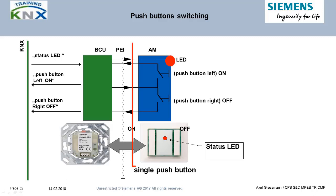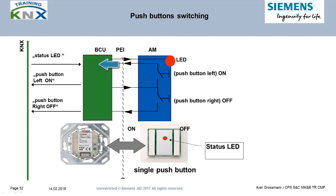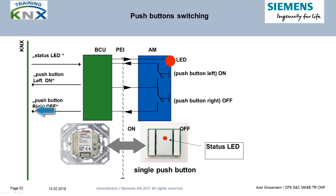Starting at the right side: there we have the application module with the two push buttons and one LED. When you press one of the buttons, you close an electrical contact and change the voltage on one of the signal pins on the PEI. The bus coupler registers this change and starts the program routine assigned to it. So if the right button is pressed, a telegram with the signal value of one is sent to the bus, and with the left button, the opposite value zero. You will also learn in detail how the complete telegram looks later.